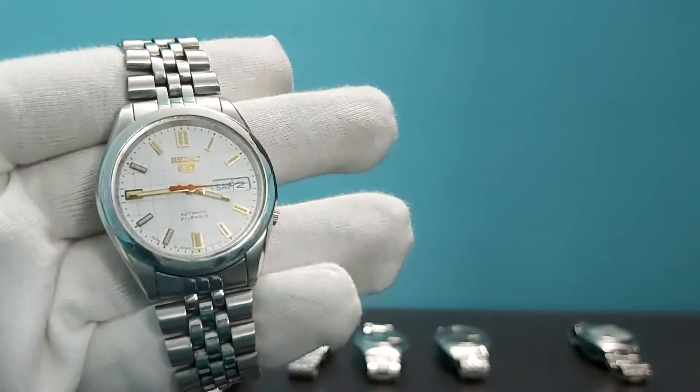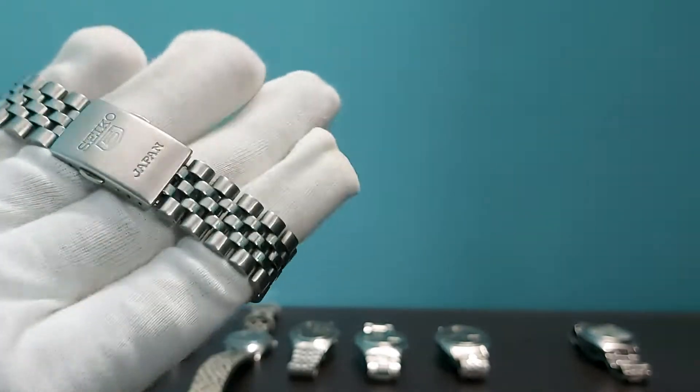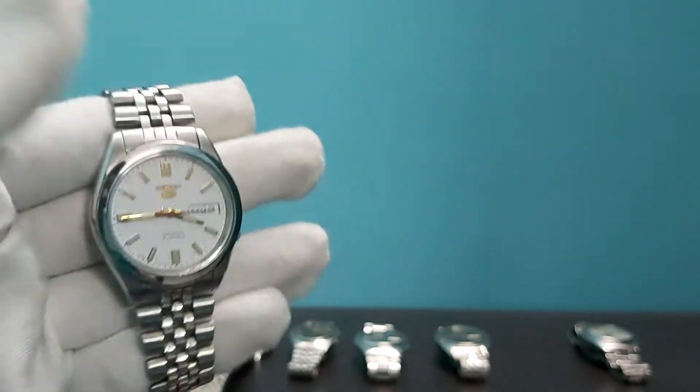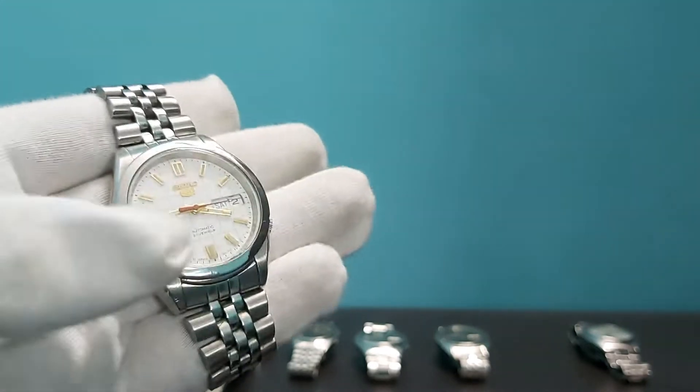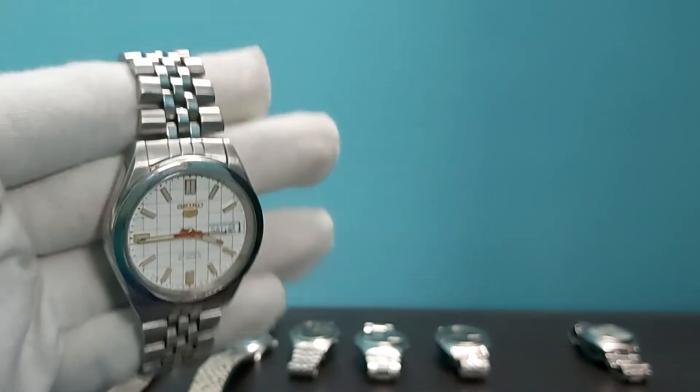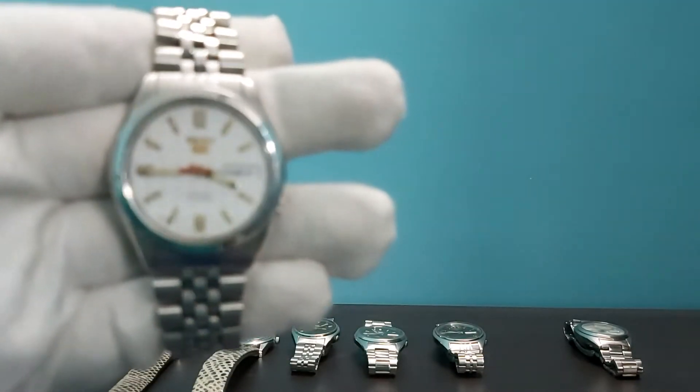So it's a beautiful checkered dial with gold indices and on a Jubilee bracelet. These are highly anticipated models because the Seiko models are hard to find on Jubilee bracelets. This is the model number SNXF05.